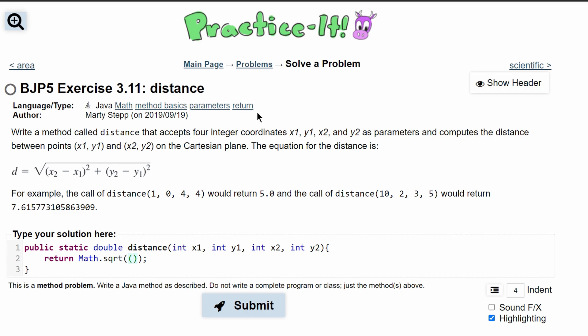First we have our x2 minus x1. So we are going to have x2 minus x1 and this is all squared. So we can actually just cut this and use a Math.pow.